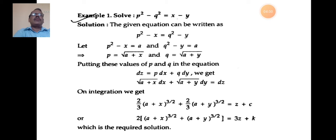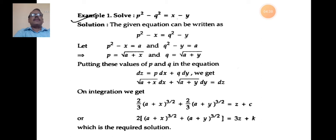We get dz = √(a + x) dx + √(a + y) dy. This is a variable separable differential equation. After integration: (2/3)(a + x)^(3/2) + (2/3)(a + y)^(3/2) = z + c. Multiplying by 3: 2(x + a)^(3/2) + (a + y)^(3/2) = 3z + k. This is the required solution of the partial differential equation.